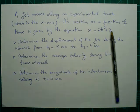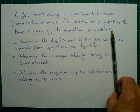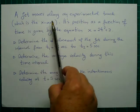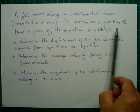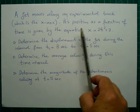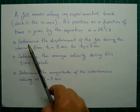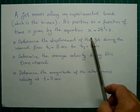Hello friends, today I'm going to present a problem from physics. Let's read the problem. A jet moves along an experimental track which is the x-axis. Its position as a function of time is given by the equation x